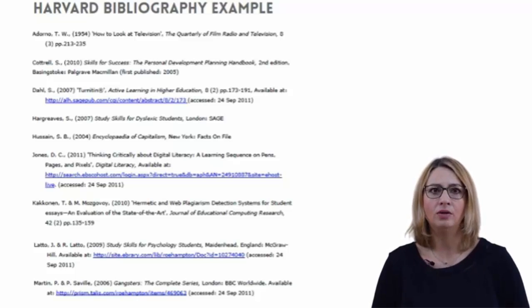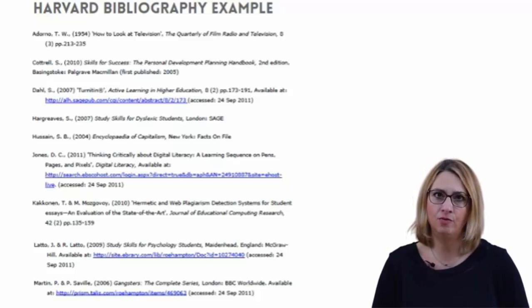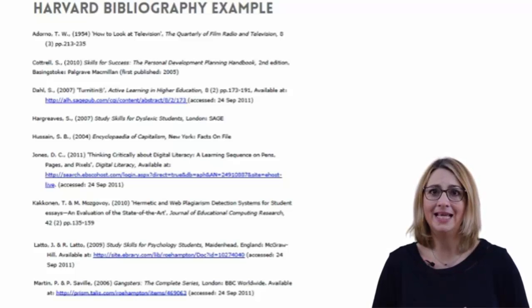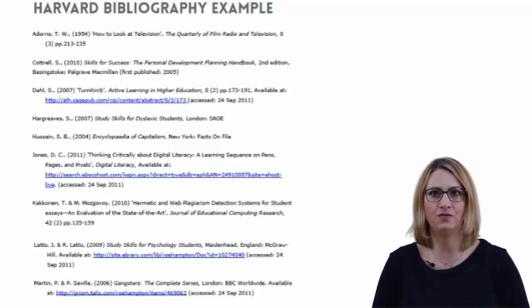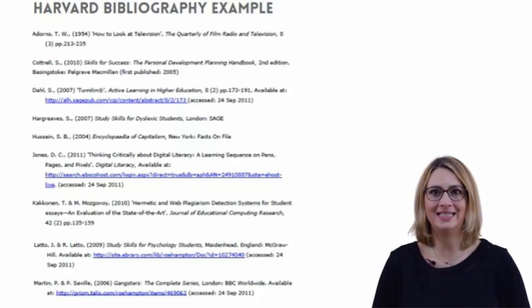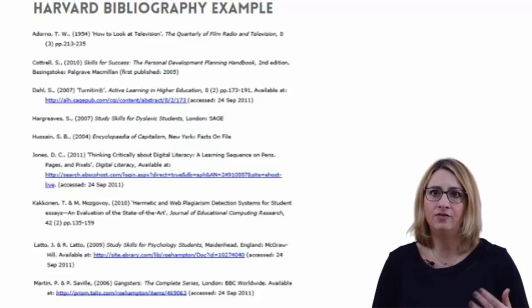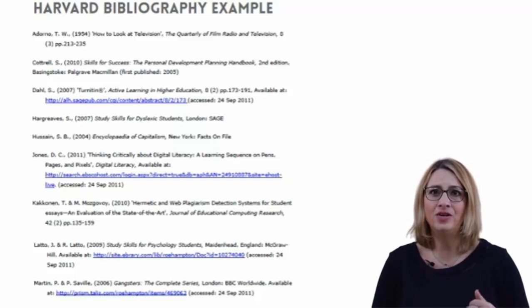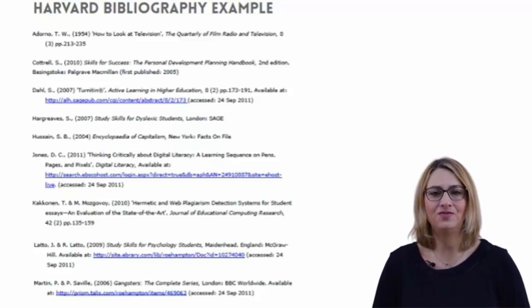The information included in the bibliography will vary with each different source, so please check this guide carefully for the information you should include. Your bibliography should be laid out as neatly as possible so it is easy for your tutor to find the full details of each source. Choose a clear font in an easy to read size, space out each entry with a line in between each one, and alphabetize the list from A to Z. If an entry carries on to a second line, then this line should be indented from the rest of the text.